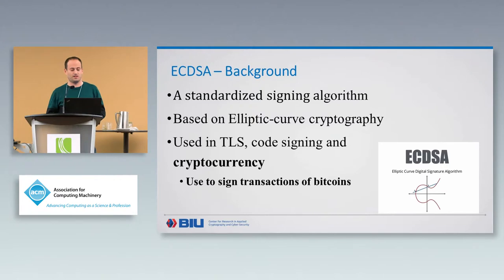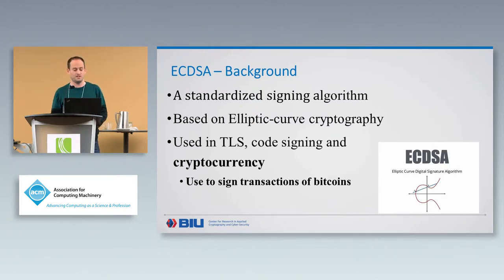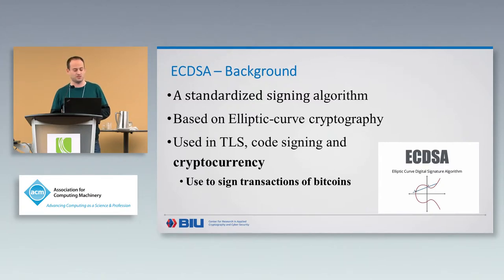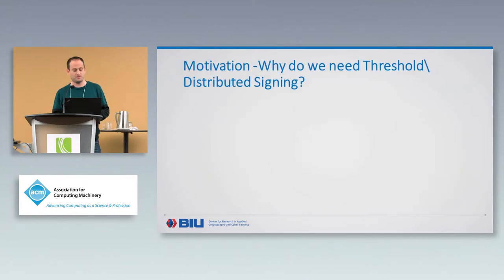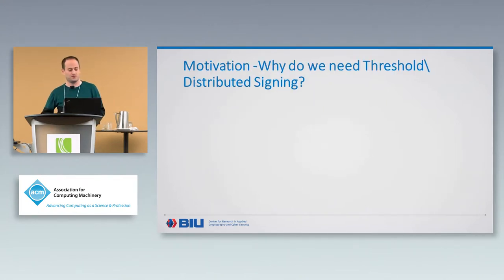EC-DSA is a signing algorithm based on elliptic curves and is widely used in practice. It has gained a lot of interest in recent years because of its use to sign transactions of cryptocurrency. I want to start with some motivation: why do we need solutions for threshold or distributed signing?